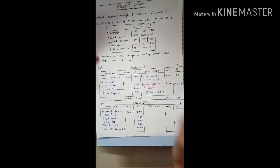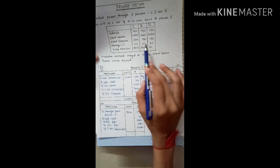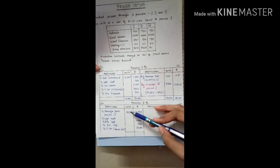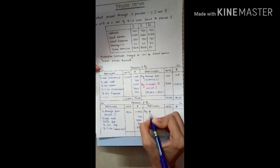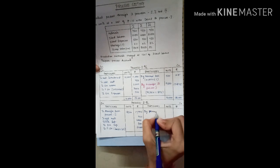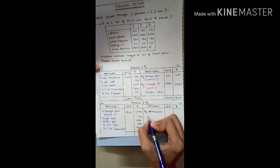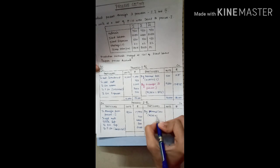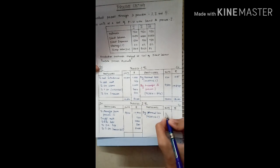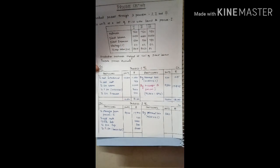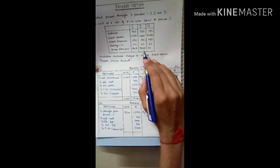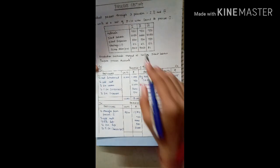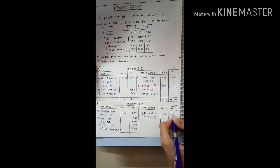For process two, we have wastage of 4%. This 4% wastage is calculated from the units input, as in process one — normal loss: 9,500 into 4% = 380 units. The scrap value of 380 units is rupees 0.50 paise, so 380 units into 0.50 gives 190 rupees.